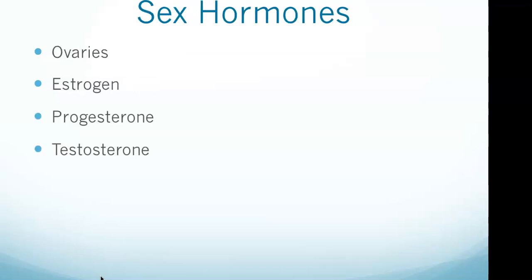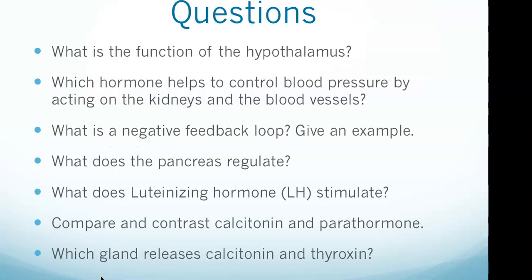Finally, the sex hormones: the ovaries secrete estrogen and progesterone, while the testes secrete testosterone. Estrogen promotes the development of primary and secondary female sexual characteristics and is produced by the ovaries. Progesterone promotes the growth of the uterine lining. Testosterone induces male sexual differentiation in utero and development of secondary male sexual characteristics in puberty. There's quite a bit in this section — being able to answer all the review questions means you're in good shape. Especially focus on being familiar with the hormones released by the anterior pituitary.